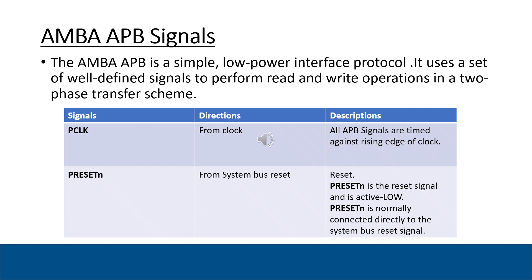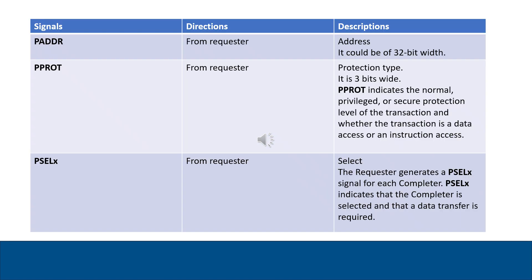In all signals of APB, the 'P' prefix is present, indicating peripherals. The next signal is PADDR — generated from the requester. It is the address signal and can be 32 bits wide. The next signal is PPROT — also generated from the requester. It is a protection type signal, three bits wide. PPROT indicates whether the signal is normal or privileged, secured or non-secured, and whether the transaction is a data access or instruction access.